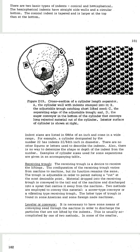The next part of this machine is the receiving trough. The receiving trough is a device to receive the liftings. The configuration of the receiving trough varies from machine to machine, but its function remains the same. The trough is adjustable in order to permit making a cut at the most desirable point. Material dropped into the receiving trough is conveyed to the tail end of the machine and discharged. Two methods are employed to convey this material: a screw type conveyor or vibrating type receiving trough. The latter type is found in some American and some foreign machines.